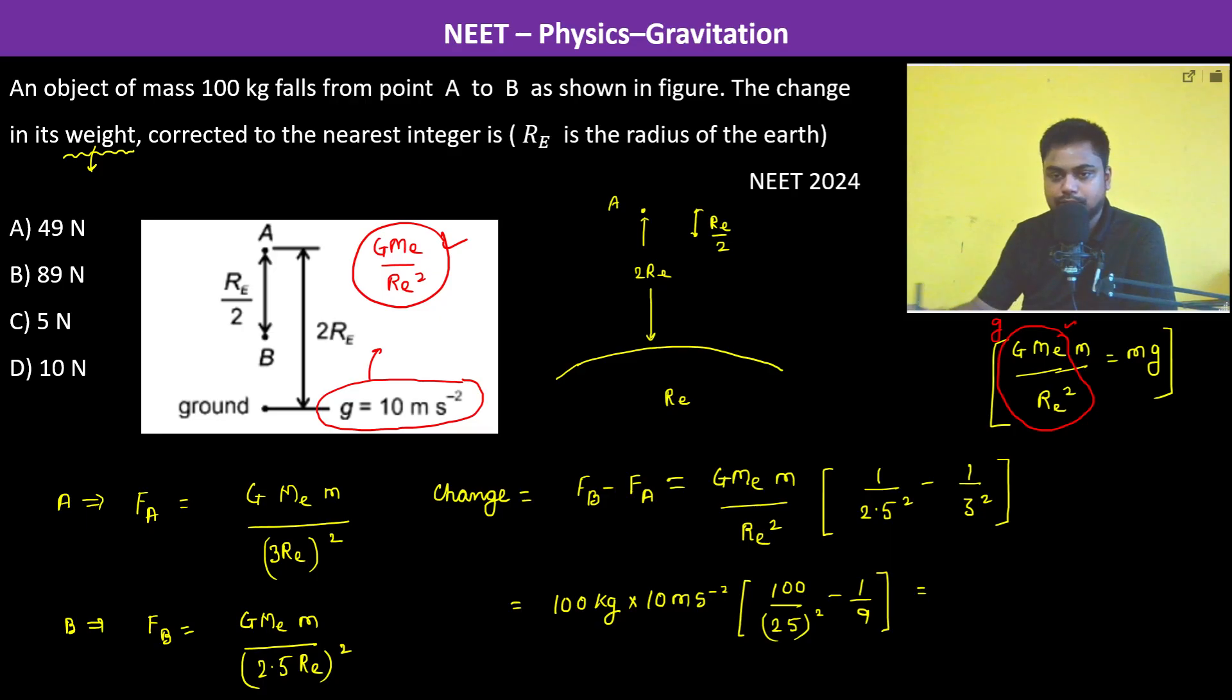We have 1 by 2.5 whole square, so 1 by 2.5 is 10 by 25, so this is 2 by 5. 2 by 5 is 0.4, so 0.4 whole square is 0.16, and 1 by 9 is 0.11. Therefore this itself is 0.05.